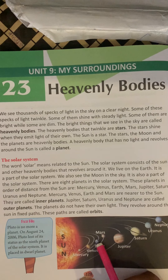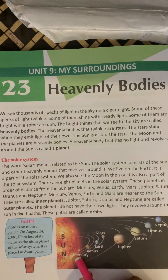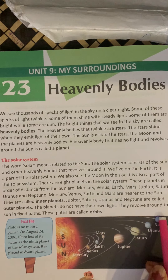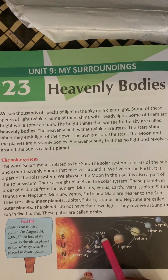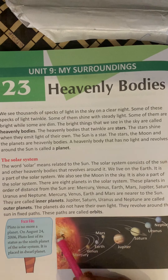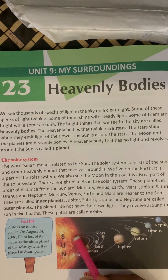The name of our planet is Earth, and how many planets are there? There are eight planets in the solar system. All eight planets revolve around the sun in a fixed path.